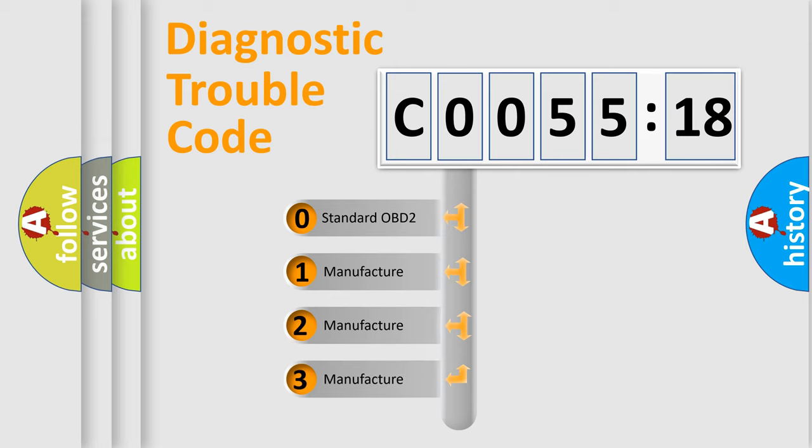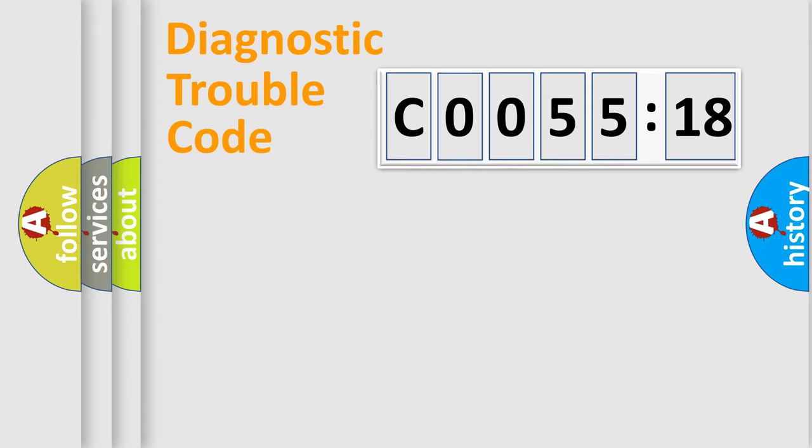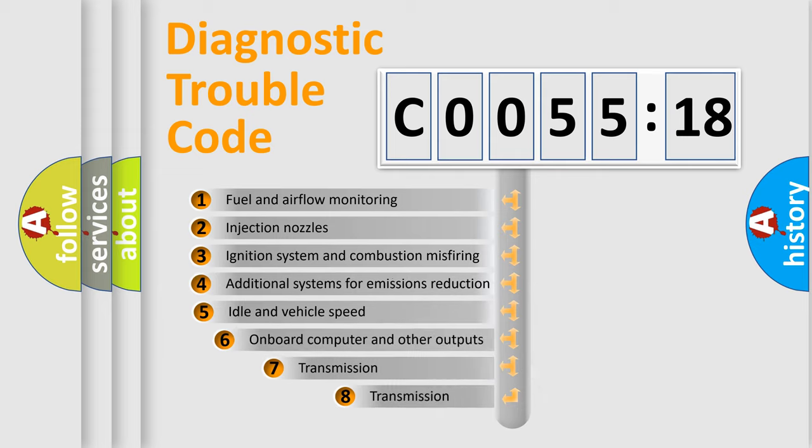If the second character is expressed as zero, it is a standardized error. In the case of numbers 1, 2, 3, it is a more prestigious expression of the car-specific error.